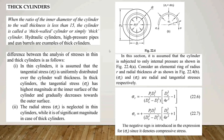When analyzing stresses in thin and thick cylinders, there are some differences. In thin cylinders, the assumption is that the tangential stress sigma-t is uniformly distributed over the cylinder wall thickness. But in thick cylinders, the tangential stress sigma-t has its highest magnitude at the inner surface of the cylinder and gradually decreases towards the outer surface. Also, radial stress sigma-r is neglected in thin cylinders, but in thick cylinders it is of significant magnitude and must be considered.